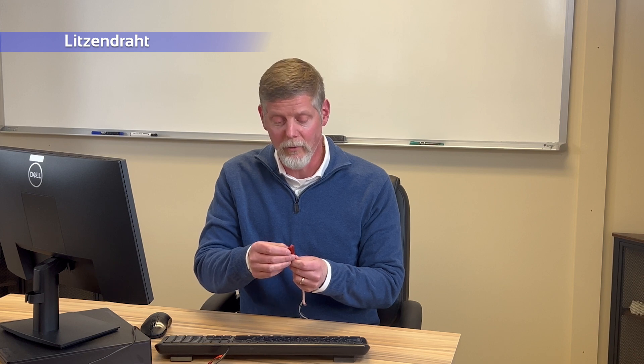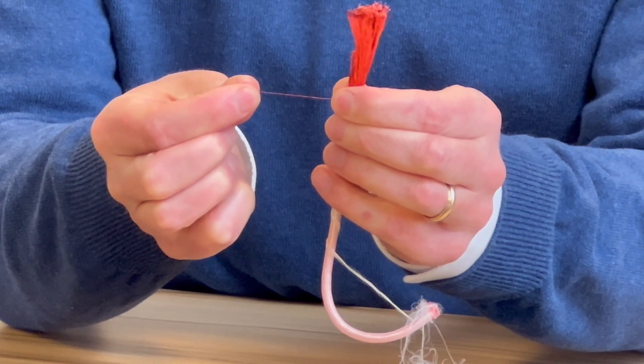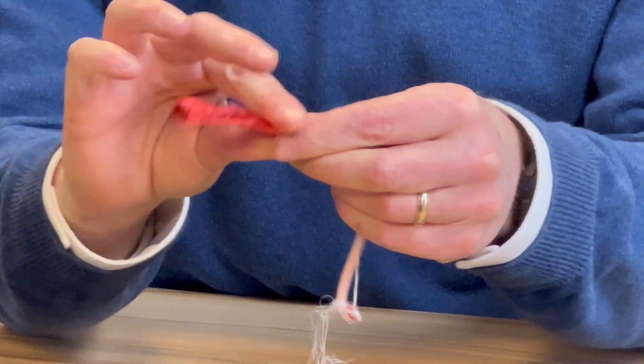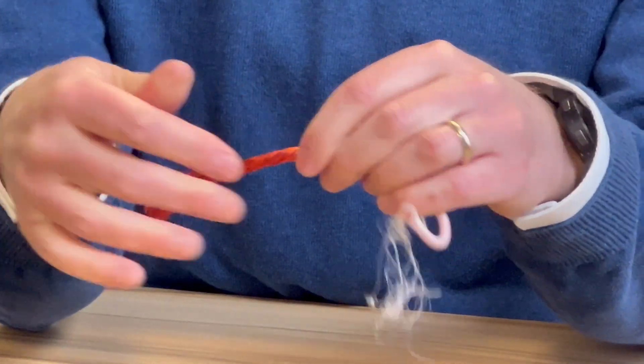Litz wire comes from the German word Litzendrat, which means braided or woven wire. But to first understand that, we need to take a look at magnet wire. Magnet wire would be one single strand of wire, generally copper or aluminum, that has an enamel coating on it. So this one individual strand would be magnet wire. When you take two or more of them together and group them, it becomes Litz wire.